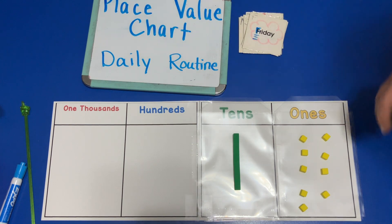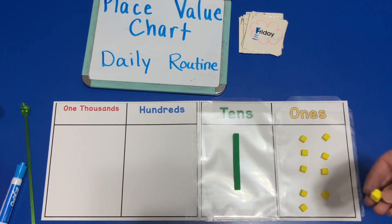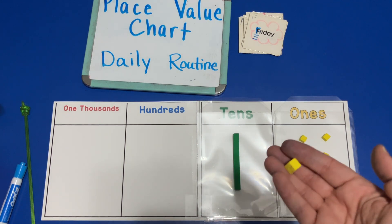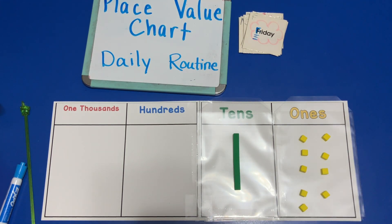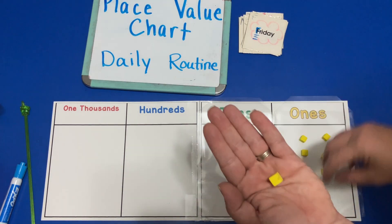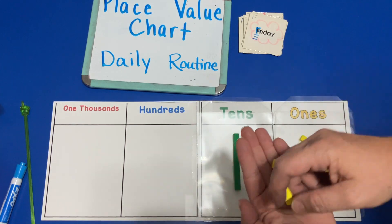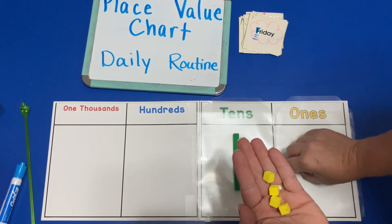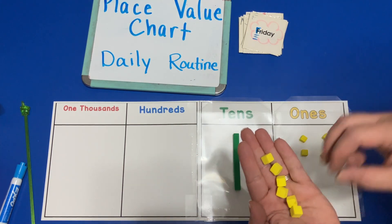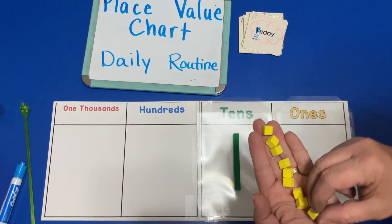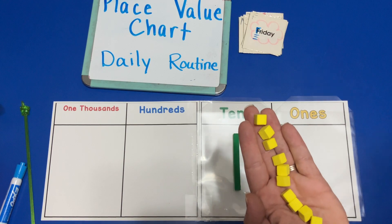And on Friday we add one — oh no, there's not room for this one in the ones place, because you can only fit nine in the ones place at once. So now we would count: one, two, three, four, five, six, seven, eight, nine, ten.